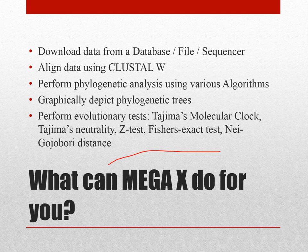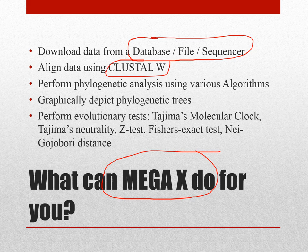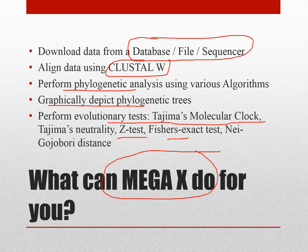MEGA 10 is the latest version and can perform multiple operations: you can download data, align data, perform phylogenetic analysis, graphically depict trees, and perform almost all evolutionary tests cited in the literature — such as Tajima's molecular clock test, the neutrality test, and the Nei-Gojobori distance. These are the different functions you can execute with MEGA 10.